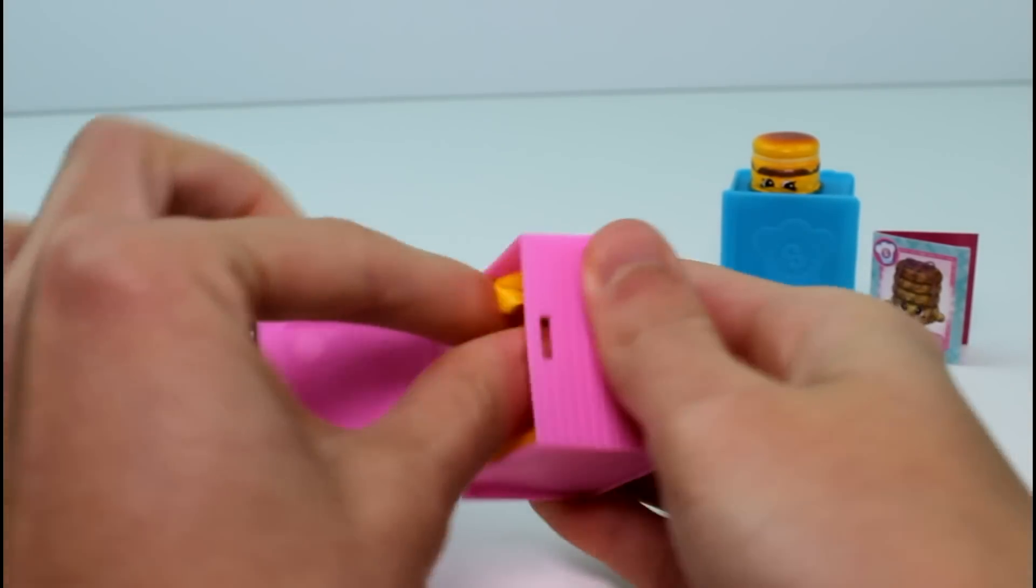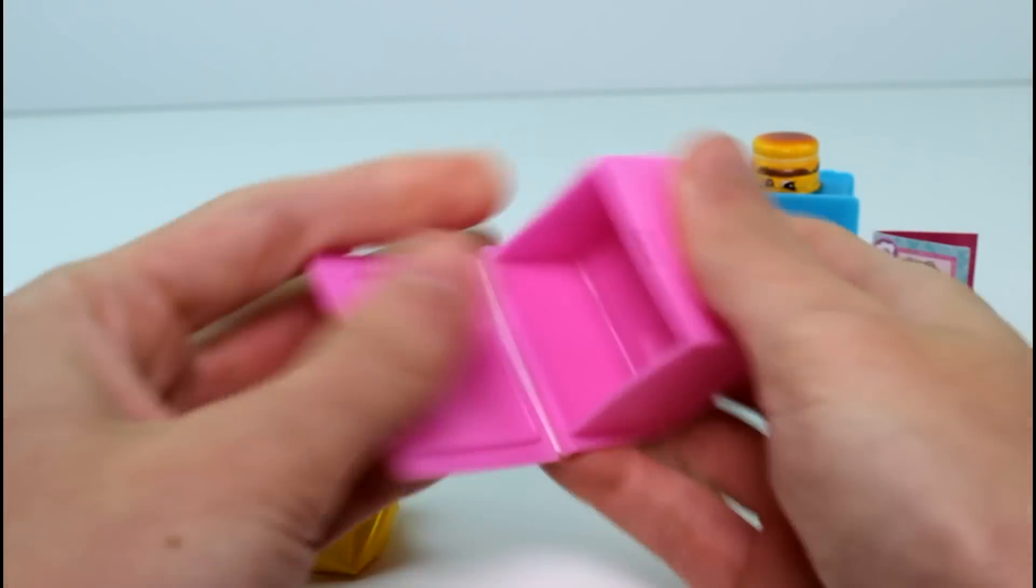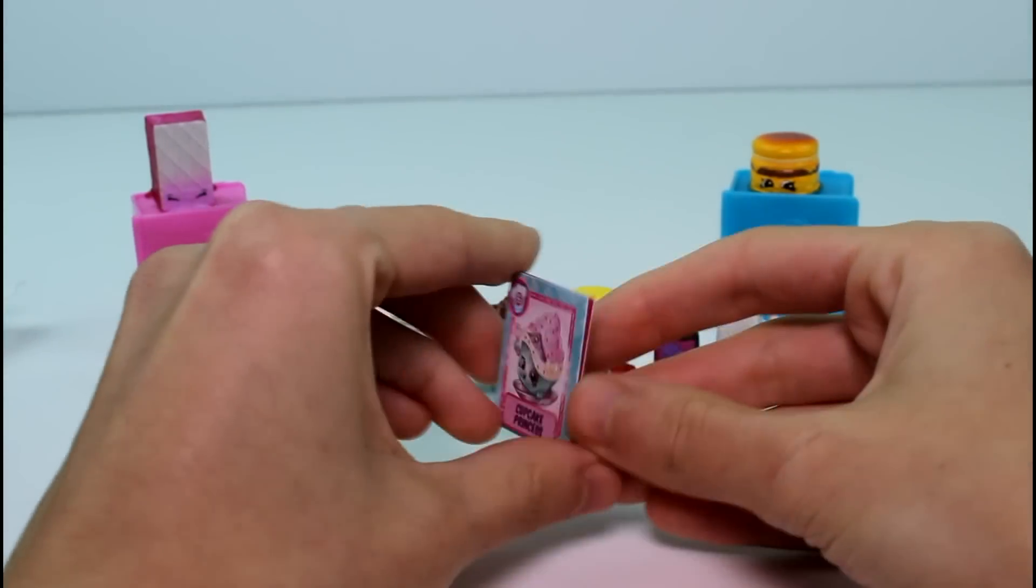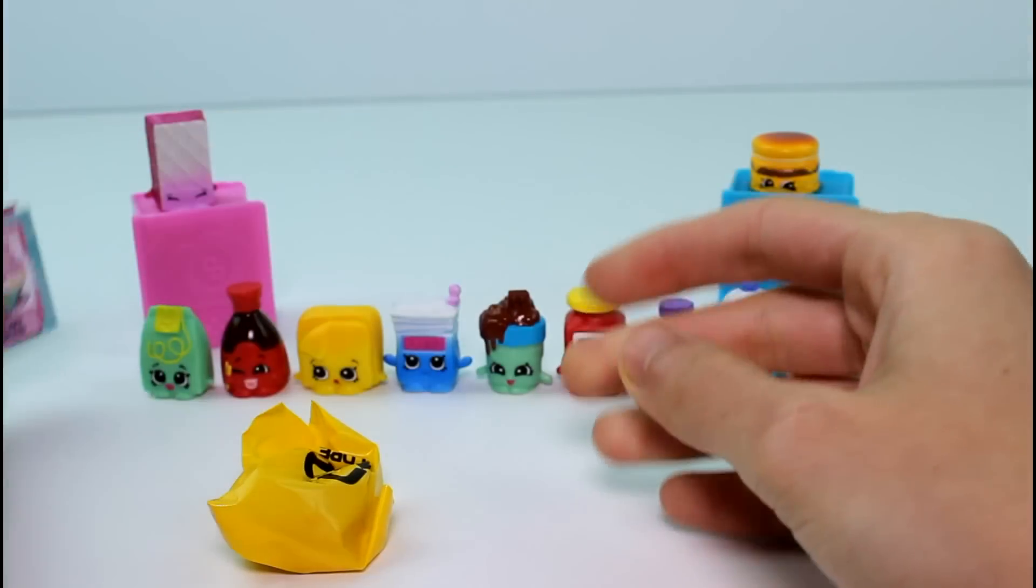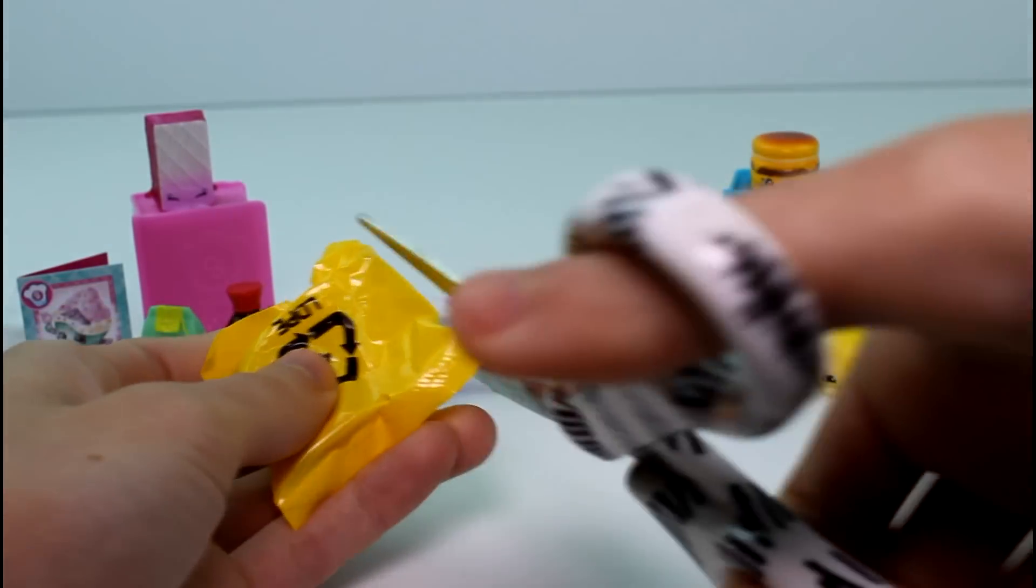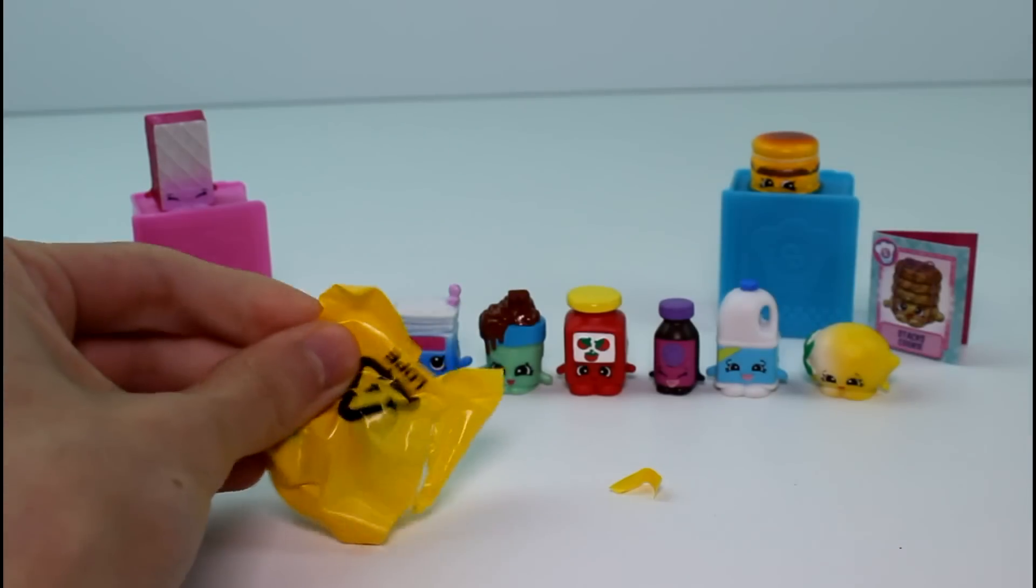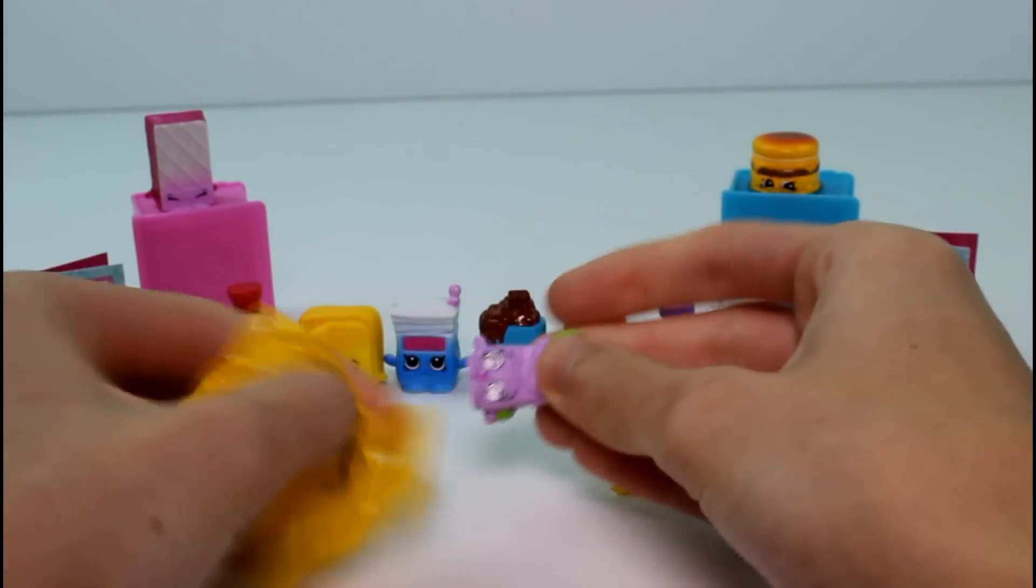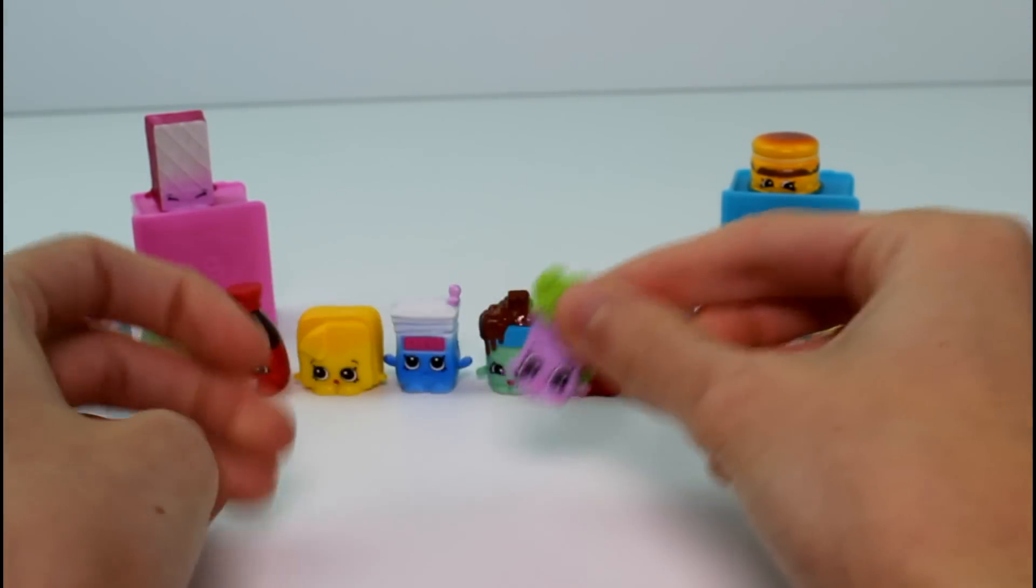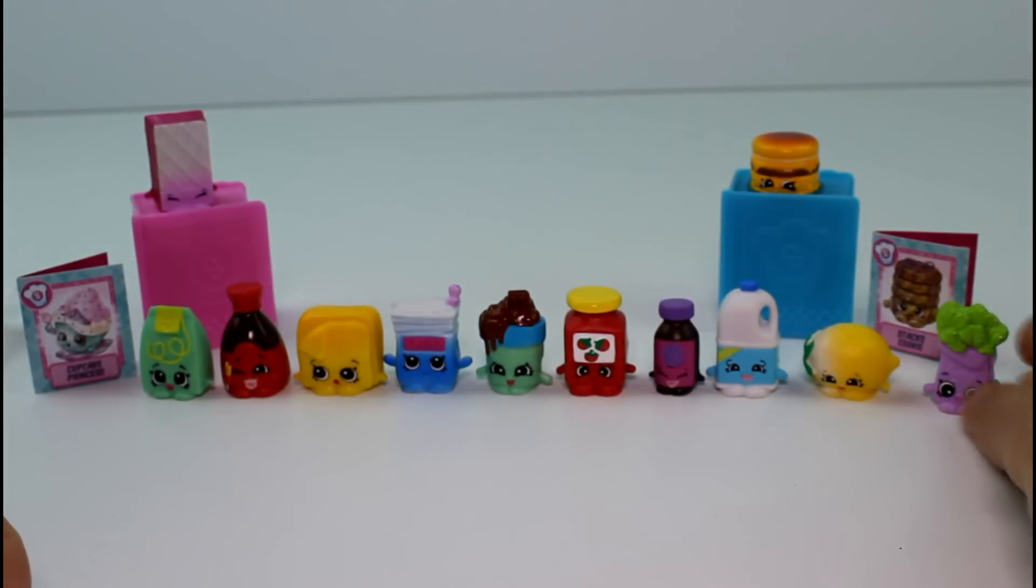And then let's see who we got in our next one. The recipe card that we got is Cupcake Princess. And then the little baby Shopkin that we got is Polly Parsley! Polly! Okay. Now, time to move on to the next pack.